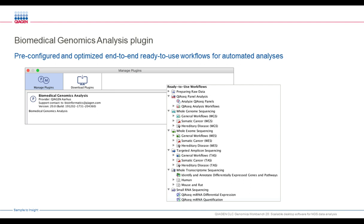Going into depth with the biomedical clinical genomics analysis plugin — if you're working with mouse, rat, or human, this plugin has a lot of workflows that are standard in the field for oncology and for hereditary workflows. You can see family-of-three, family-of-four, and so on. For somatic oncology, there are tumor-normal sample workflows, each slightly different in what they use for variant calling and filtering, specific to the purpose at hand.